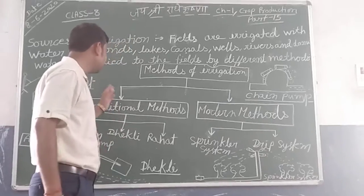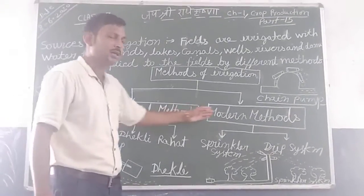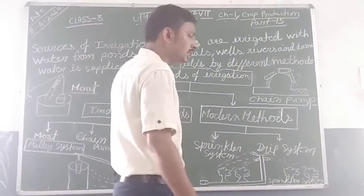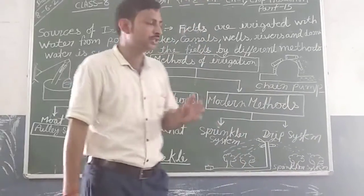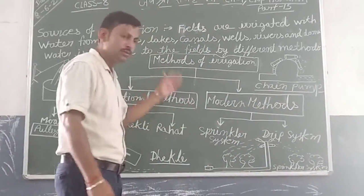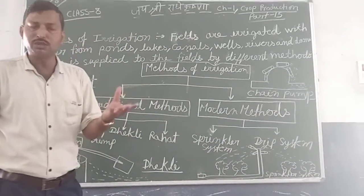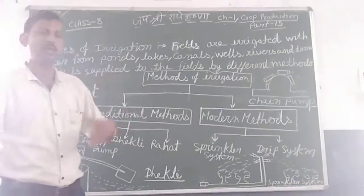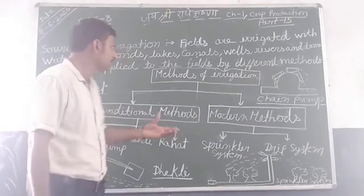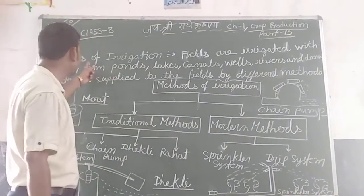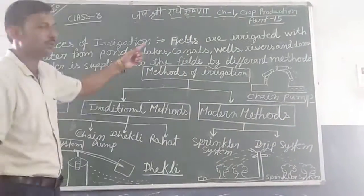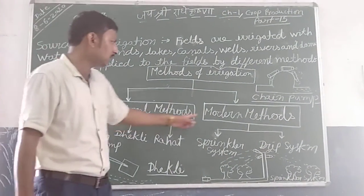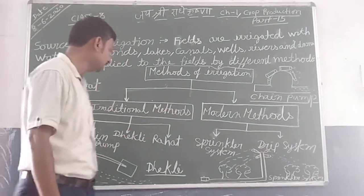We have discussed the traditional method of irrigation and the modern method of irrigation. Irrigation is the process of supplying water to crops at regular intervals. In summary, we covered the sources of irrigation and the two methods: the traditional method and the modern method.